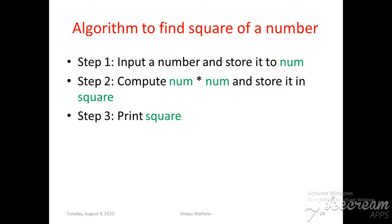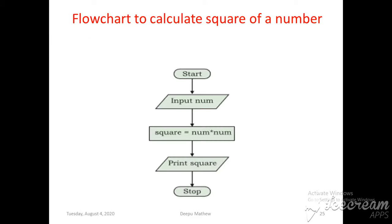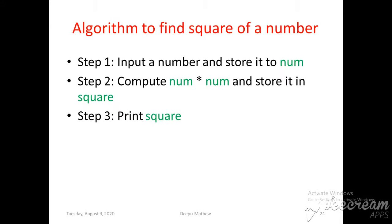First we write the algorithm for finding the square of a number, then convert it into a flowchart. Oval symbols are used for starting and stopping, so first we draw the oval symbol and write 'Start'.